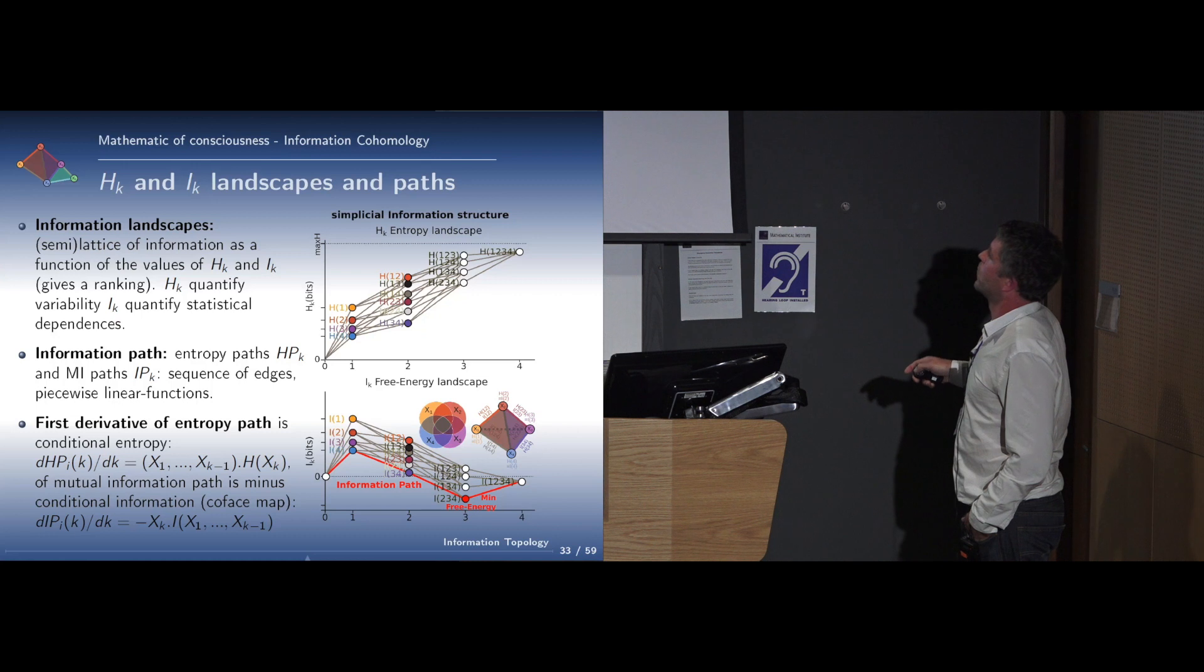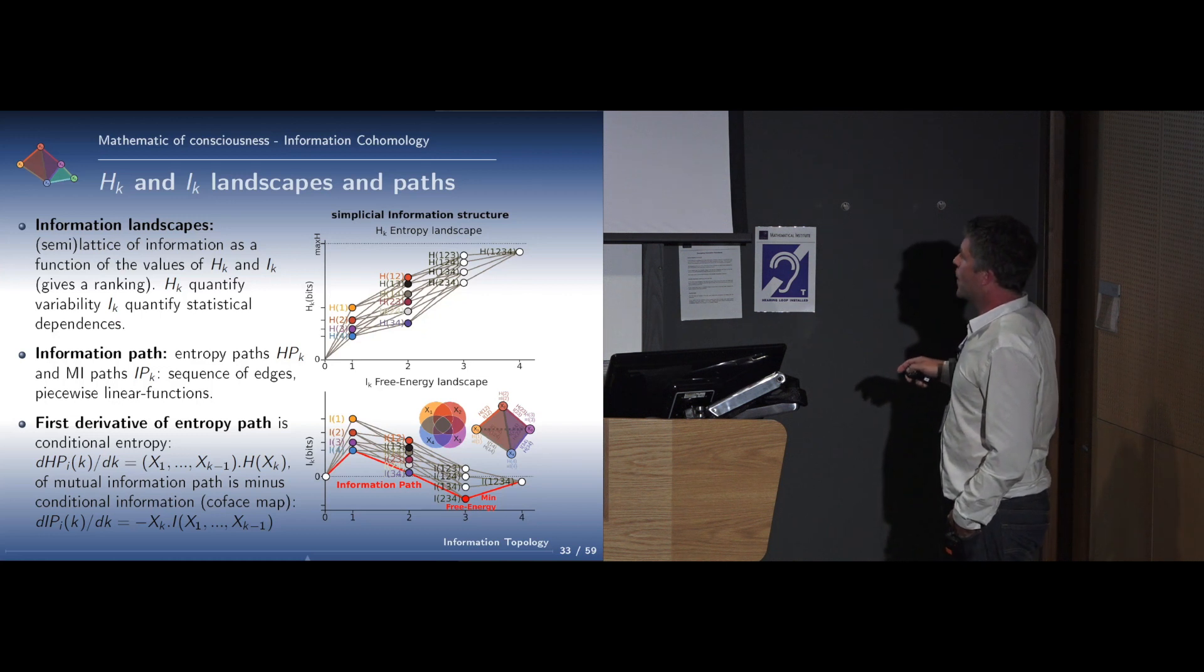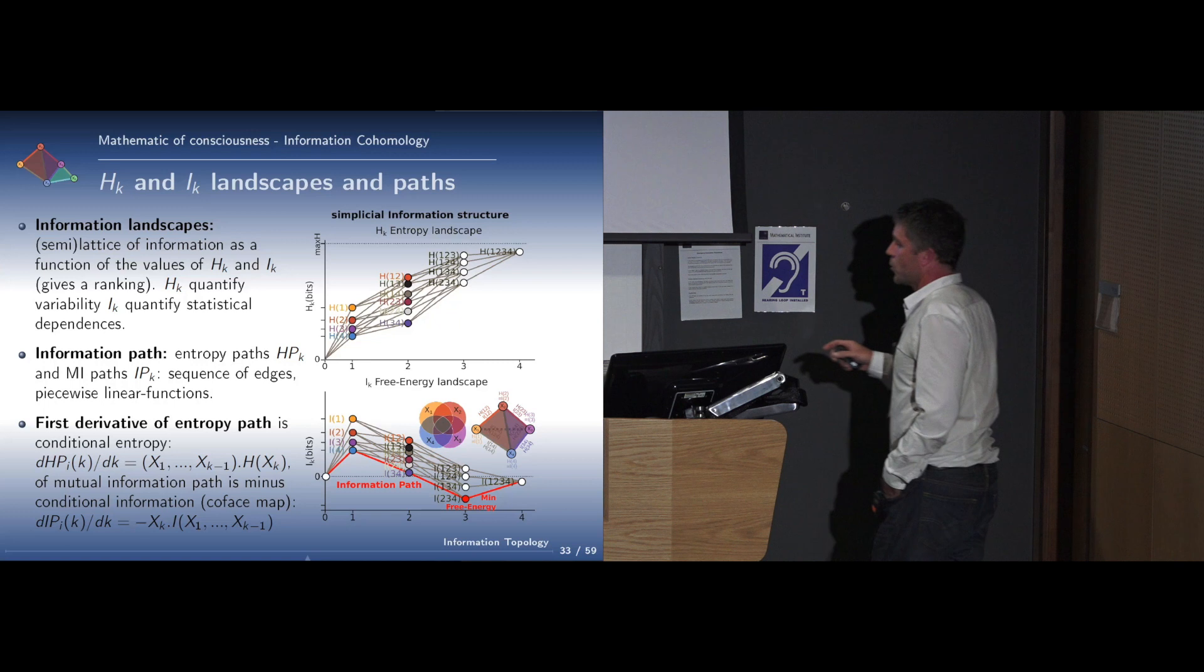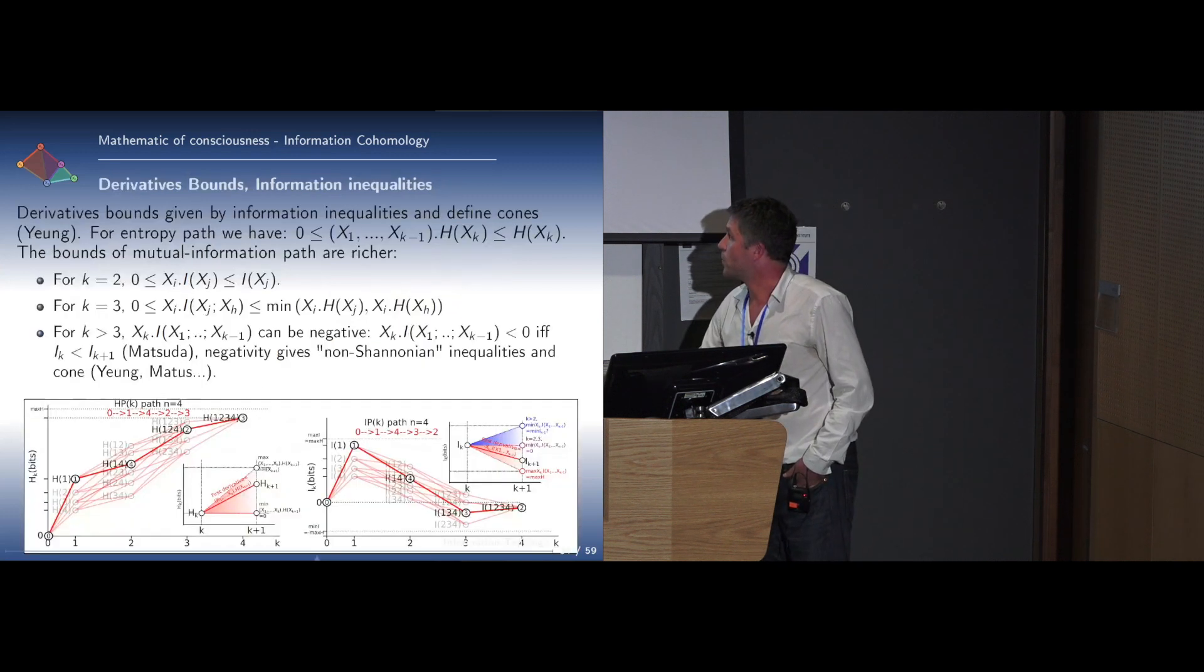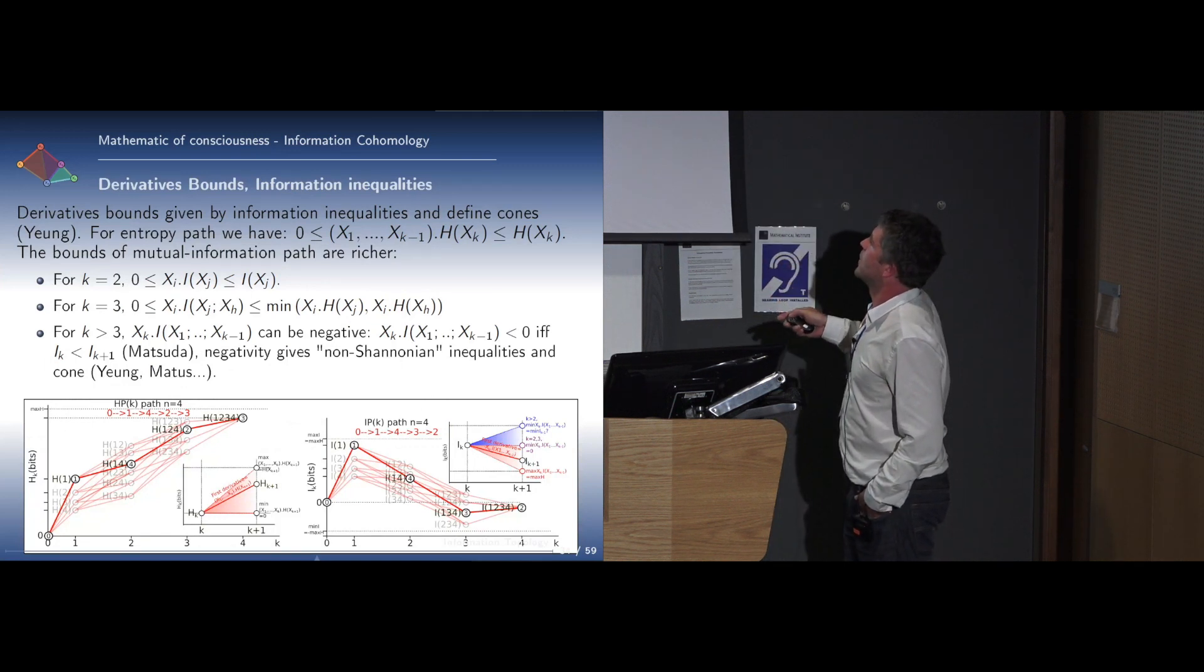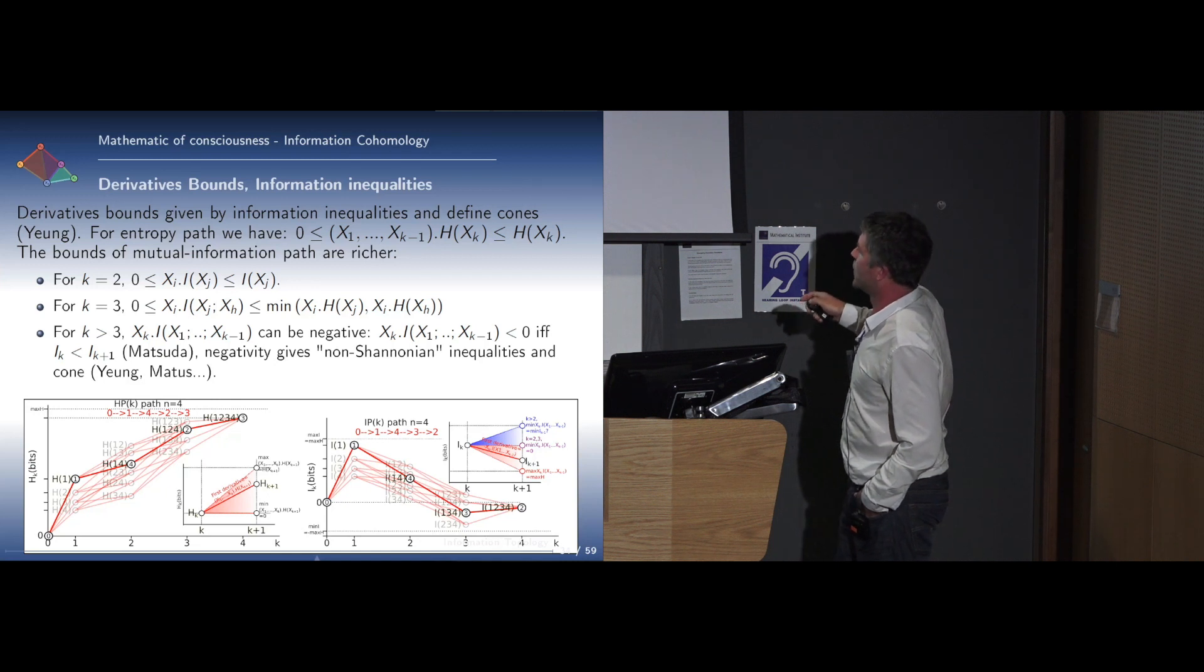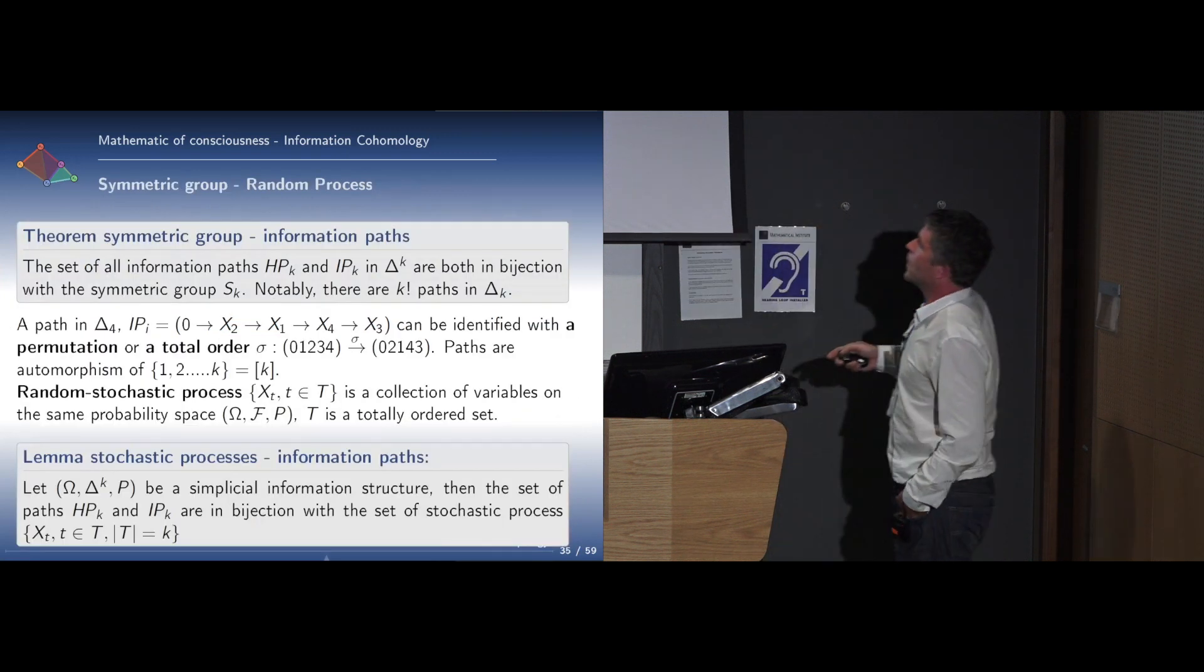We represent the information landscape as depending on the values of entropy or mutual information. For the mutual information, here we have all the marginals, the pairs, the triplets, the quadruplets, and so on. The information path is the sequence of edges, and it's a piecewise linear function. The derivative of this piecewise linear function is minus the conditional mutual information. We can get the usual inequalities that define cones and non-Shannon inequalities, which is linked to negativity, which define another cone.